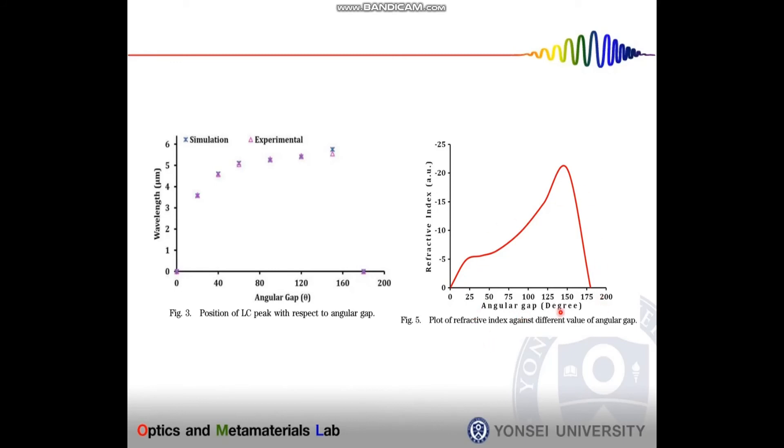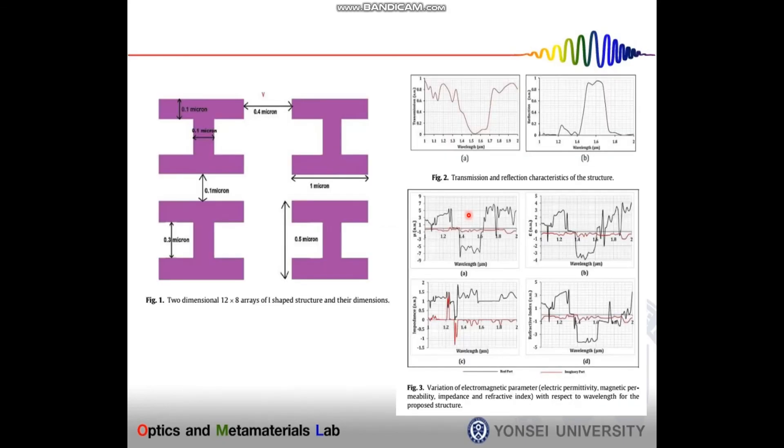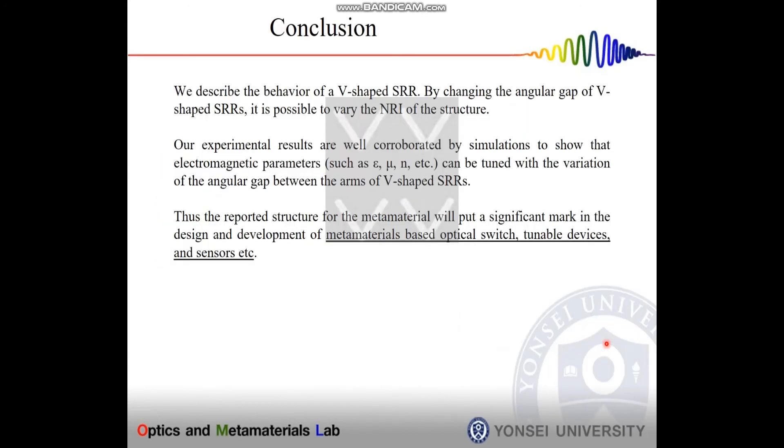By changing the angular gap, we can change the refractive index of that material. The other work is I-shaped SRR structure metamaterial where we designed an I-shaped structure which gives the negative value at the optical window at 1.55 micrometers.